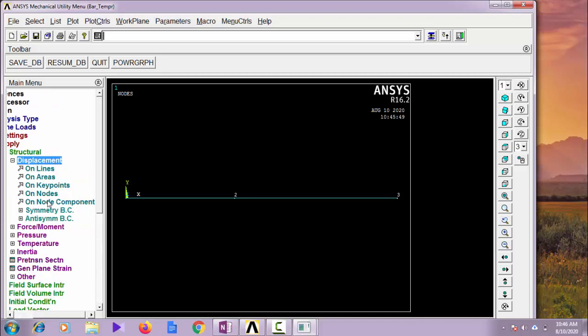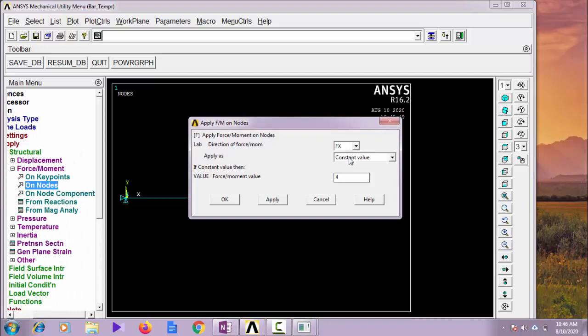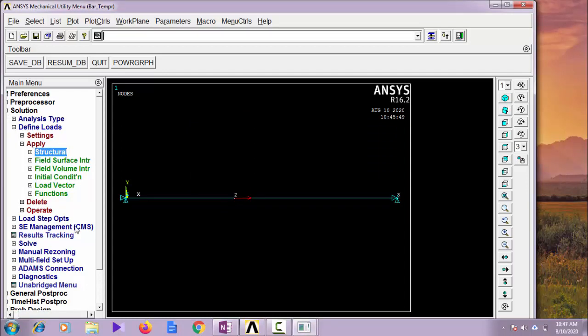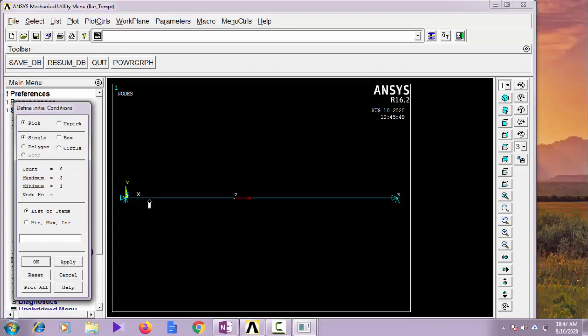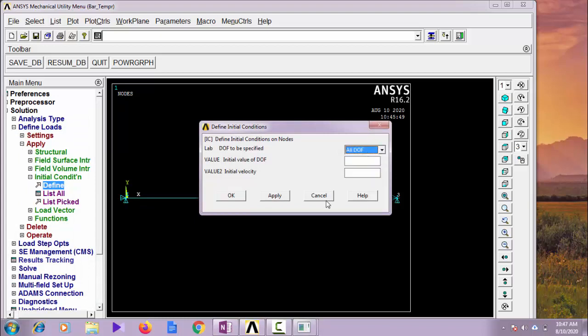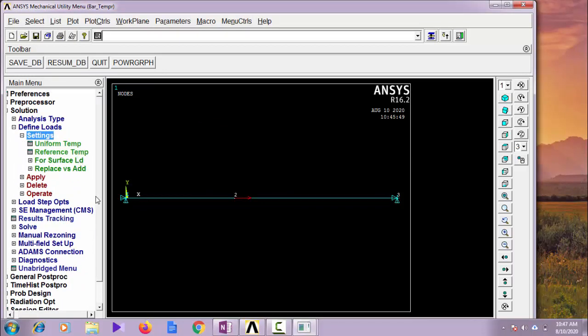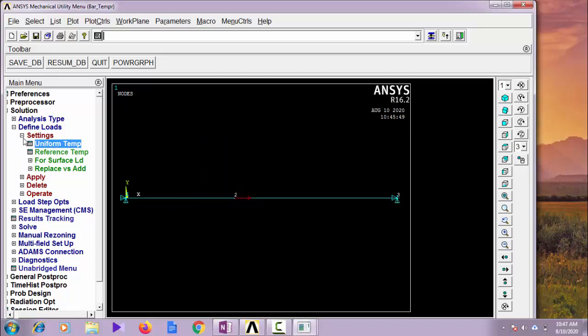Now let us go with displacement constraints on nodes. Both ends, all degrees of freedom arrested. In middle we will be having a force of 4 x 10^5 Newton. And let us apply with, not initial condition, no need of initial condition. Let us go directly with uniform temperature, so let me look it for uniform temperature. Settings, uniform temperature, that is temperature rise 30 degrees Celsius. Uniform temperature 30 degrees directly we can enter here 30 and OK.